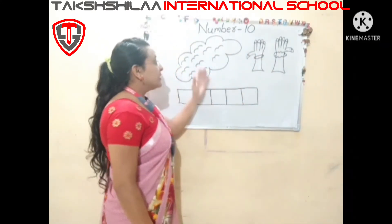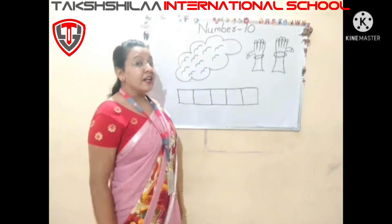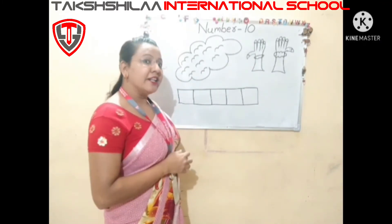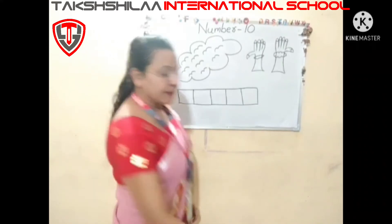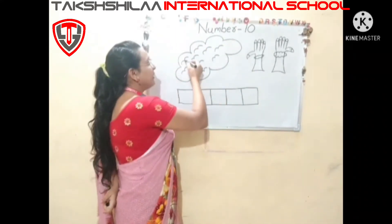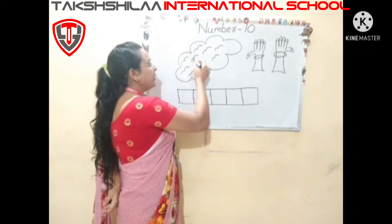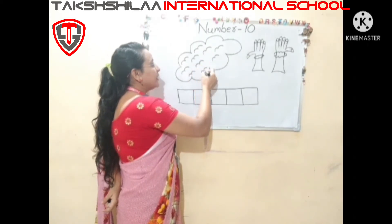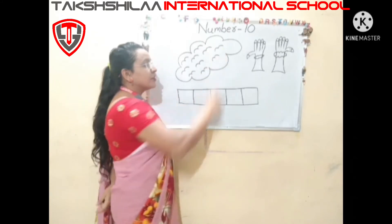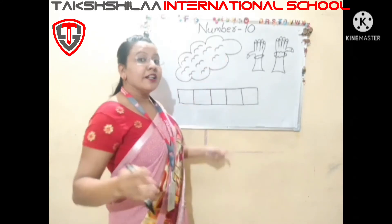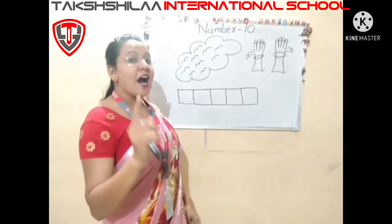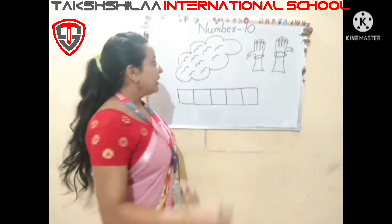Now, this is my hand. Let's count first: 1, 2, 3, 4, 5, 6, 7, 8, 9, and 1, 0 — 10. So today we are going to learn how to write number 10.